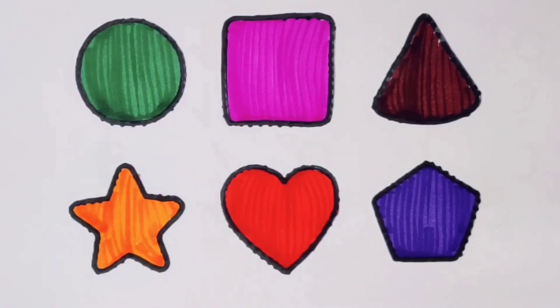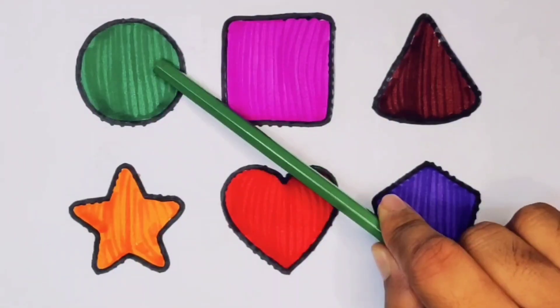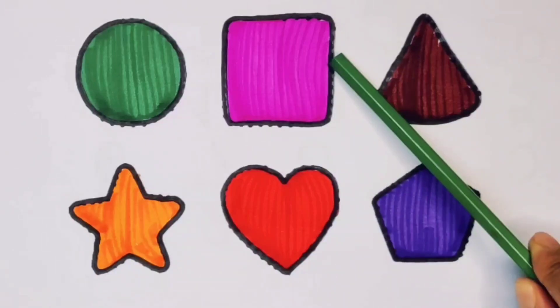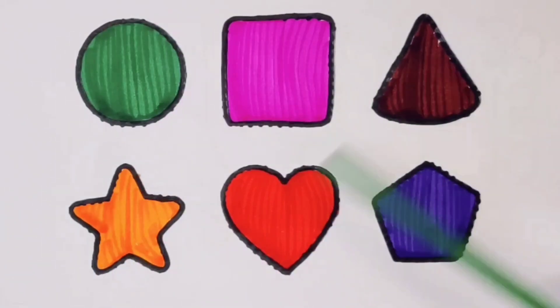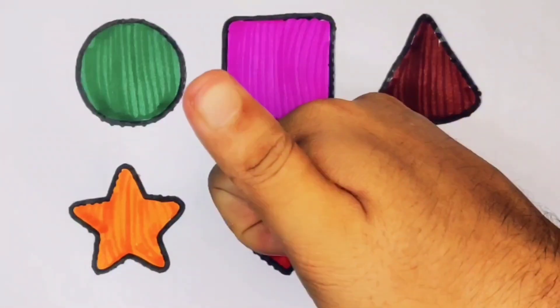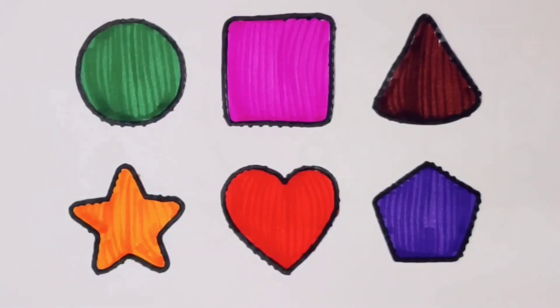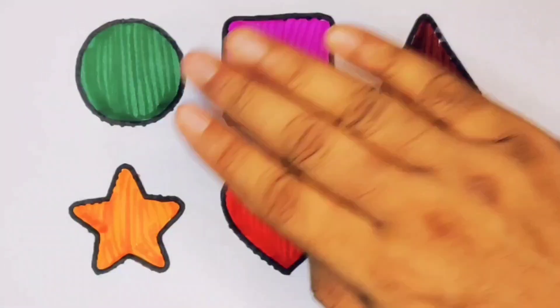What did we learn? We learned green circle, pink square, chocolate triangle, orange star, red heart, and purple pentagon. Thank you for watching my video. If you liked it, please subscribe. Bye bye!